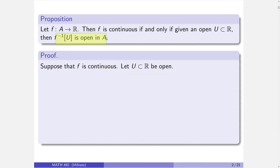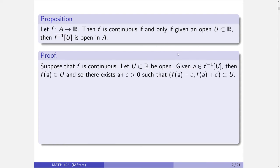So it's an if and only if, so suppose f is continuous. I want to show that for any open subset of the reals, the inverse image is open in A. I've got an open set and I need to verify the inverse image is open. What does it mean to be open in A? That means given any element of the set, I can find a positive real number so that the interval from a minus that number to a plus that number, intersected with A, is contained in the set.